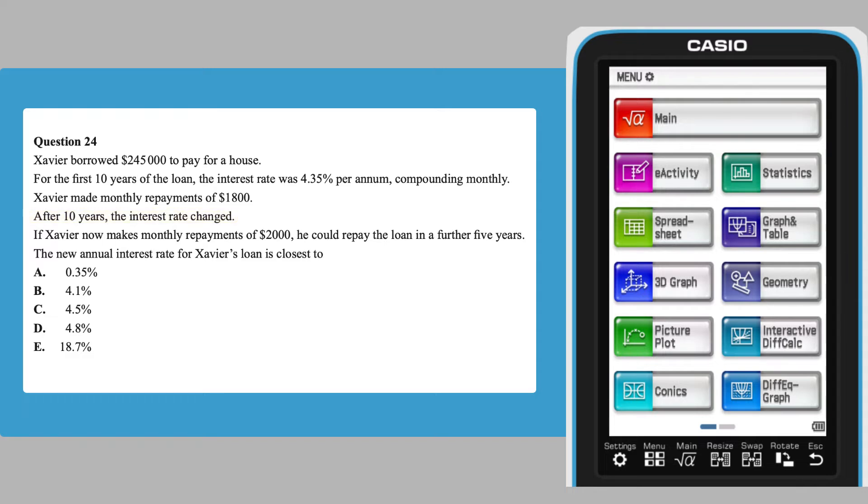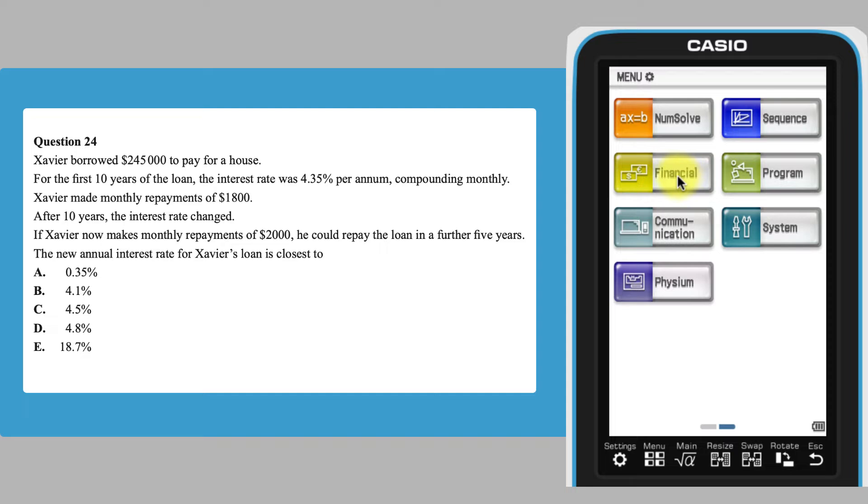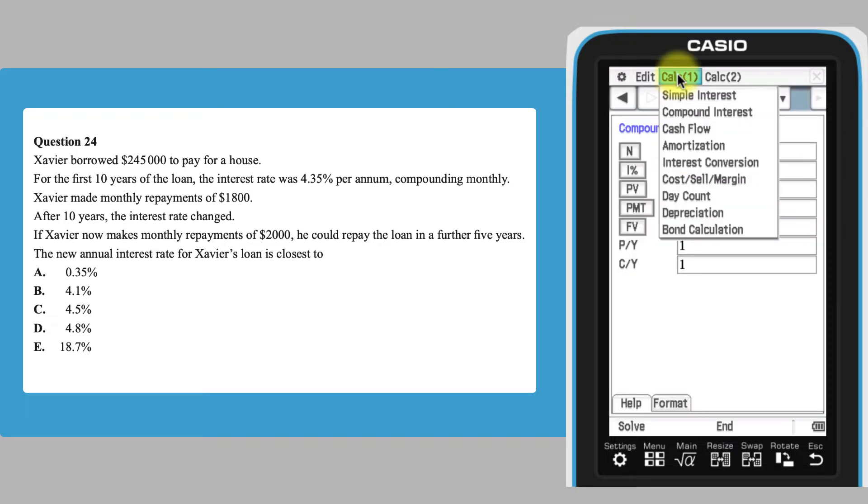To find the balance after 10 years, open the financial app and if not already chosen, select Compound Interest.